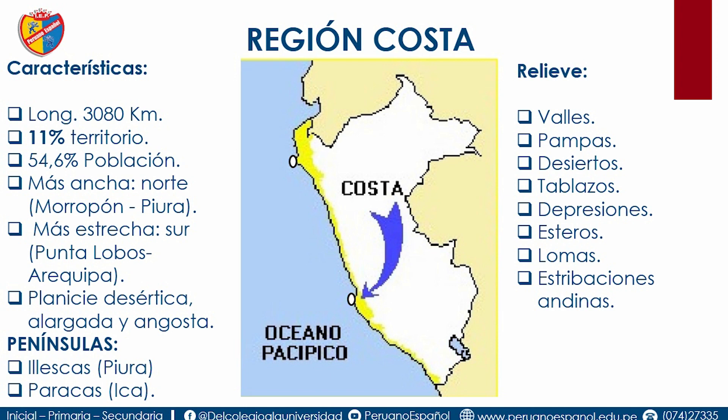Dos penínsulas: la península de Illezcas en Piura y la península de Paracas en Ica. Sus valles más conocidos: el Valle de la Leche, el Valle de Reque, el Valle del Chancay, los Valles del Rímac y los Valles del Santa en Áncash. La pampa más conocida es la de Olmos en Lambayeque. El desierto más conocido es el de Sechura, en el departamento de Piura.